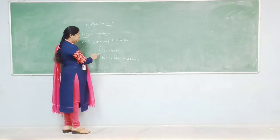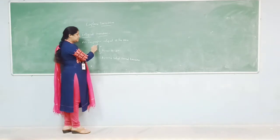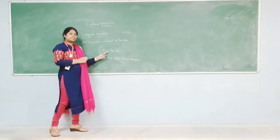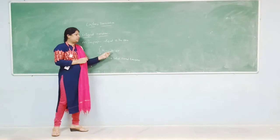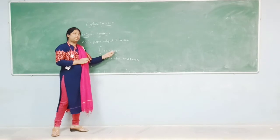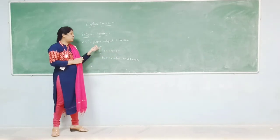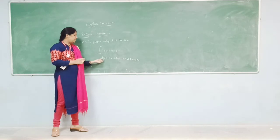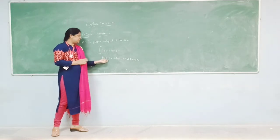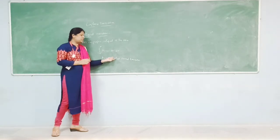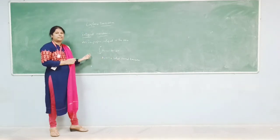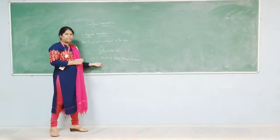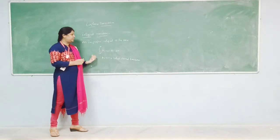The improper integral from minus infinity to infinity of k(s, t) into f(t) dt is called an improper integral. Here k(s, t) into f(t) is called the kernel transform, and s is the parameter.